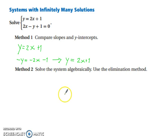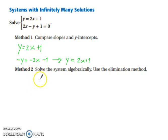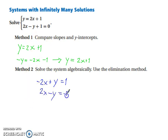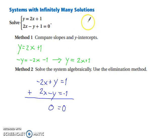What if we decided to solve the system algebraically? For the purpose of this video, we're going to use the elimination method as good practice. We need to line up our x's and y's, so the first equation reads negative 2x plus y equals 1, and the second reads 2x minus y equals negative 1. When we add vertically, we end up with 0 equals 0 — so infinitely many solutions.